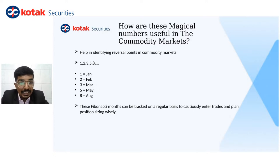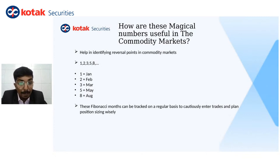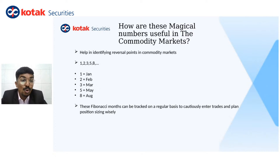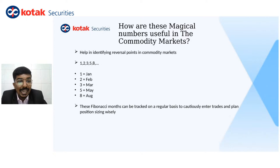What I researched is: if we denote the Fibonacci numbers as per the months in a year, we have 12 months. January is the first month, February is the second, March is the third, May is the fifth, August is the eighth — these are Fibonacci months: 1, 2, 3, 5, and 8. If we focus on Fibonacci numbers as Fibonacci months, we can easily spot good reversal points at these months. These Fibonacci months can be tracked on a regular basis to cautiously enter trades and plan position sizing wisely.